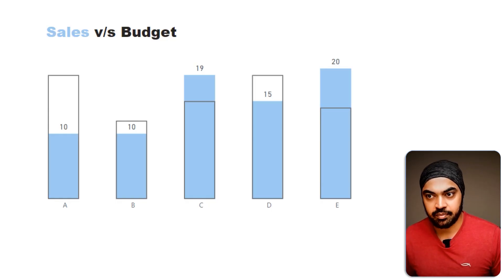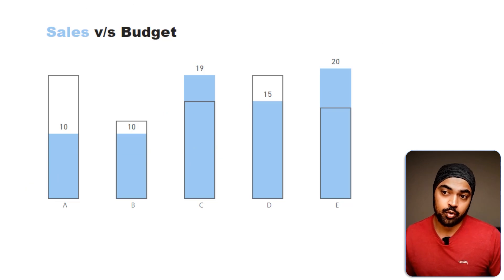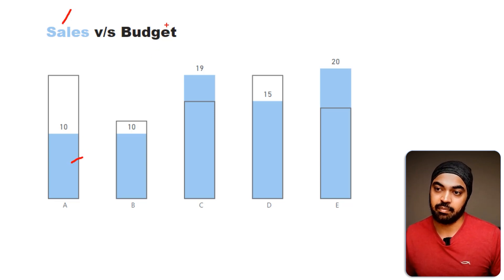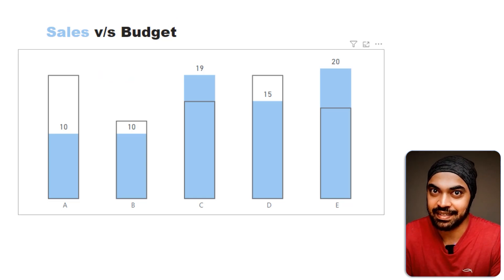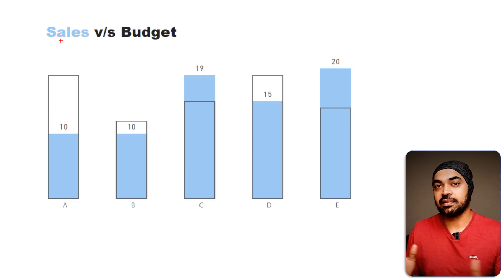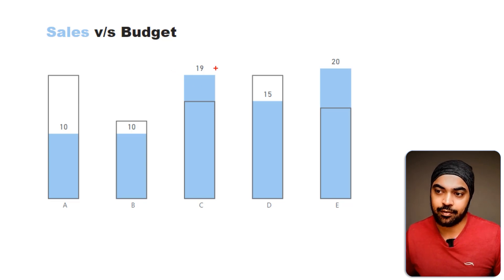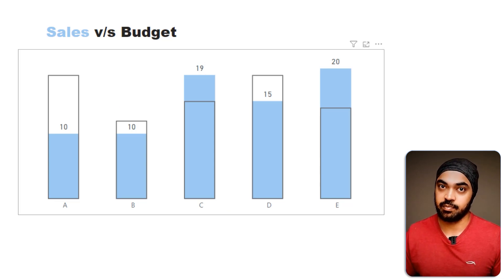Finally, do some formatting: remove the axis and grid lines if you don't need them. The title is a customized text box where 'Sales' is written in the color representing sales and 'Budget' represents the budget bar — so the title itself acts as a legend. Add data labels for the actuals. Adding budget labels too would be a bit cluttered. You could also match the data label color closely to the bar color so people can clearly distinguish sales from budgets.